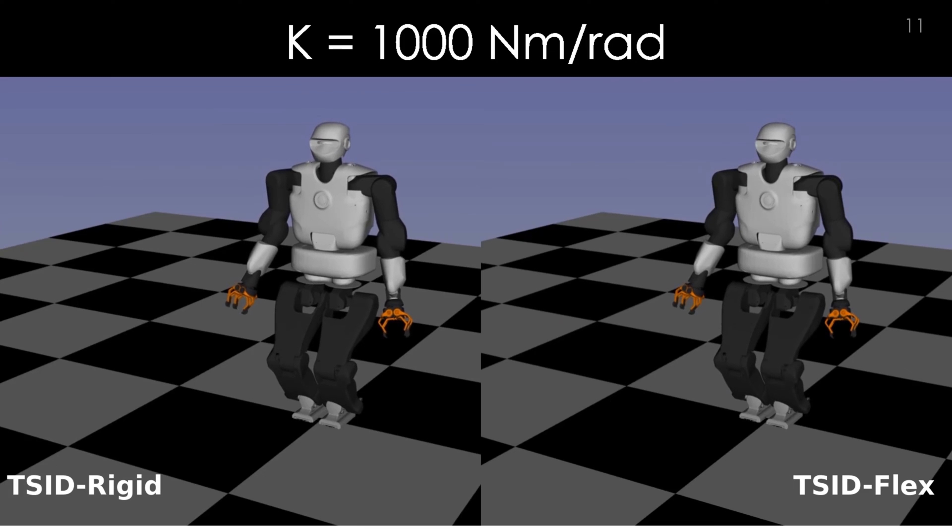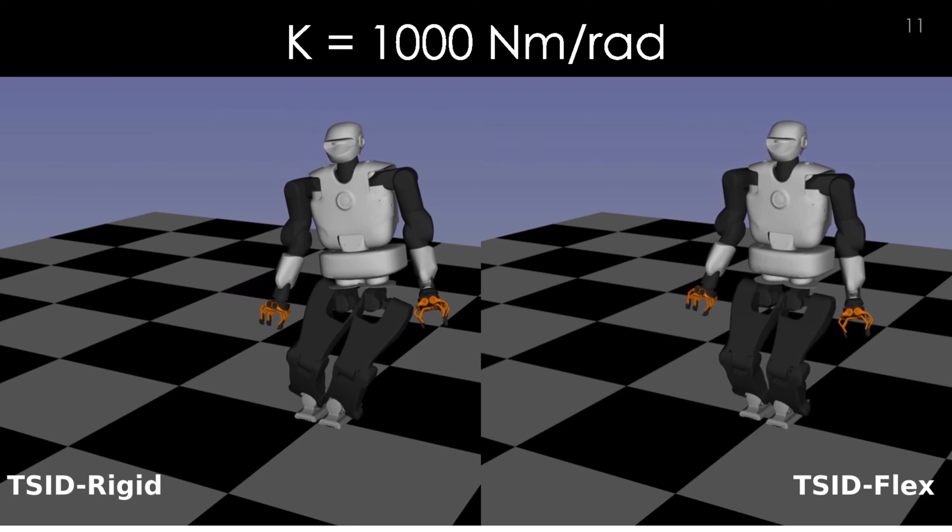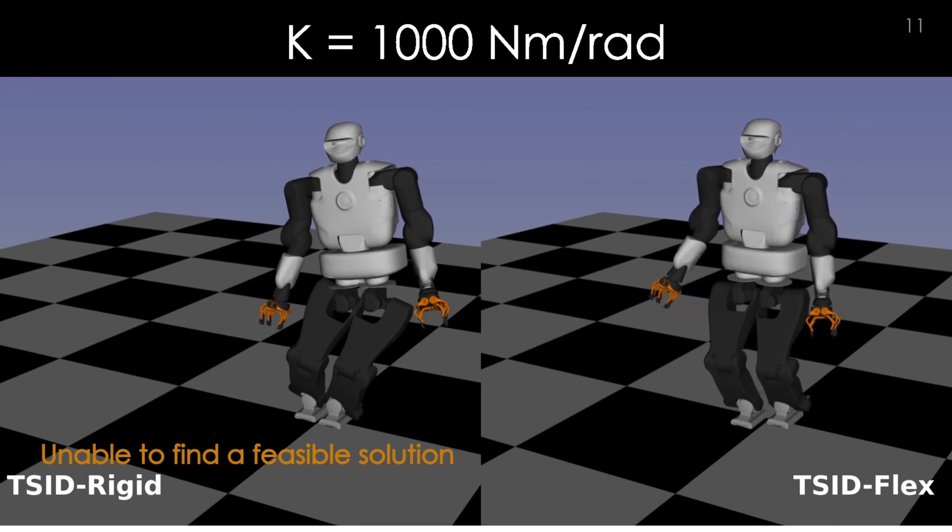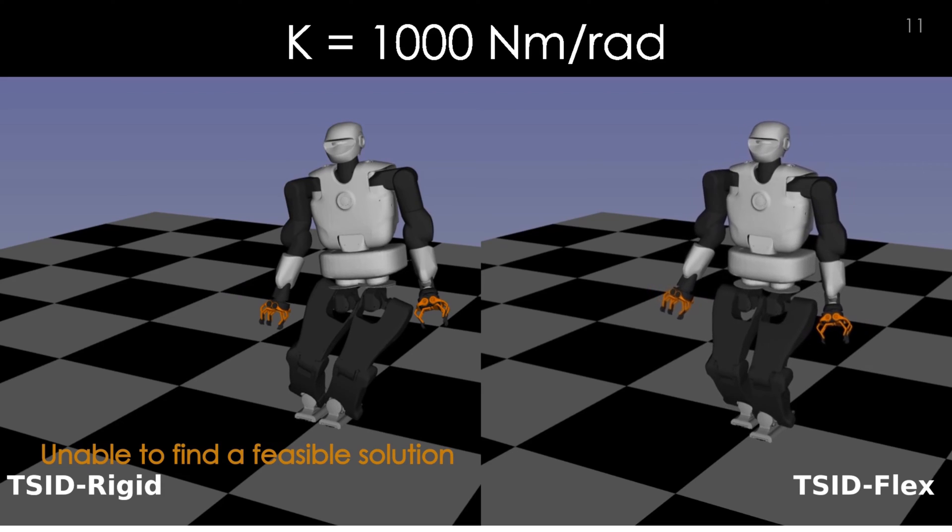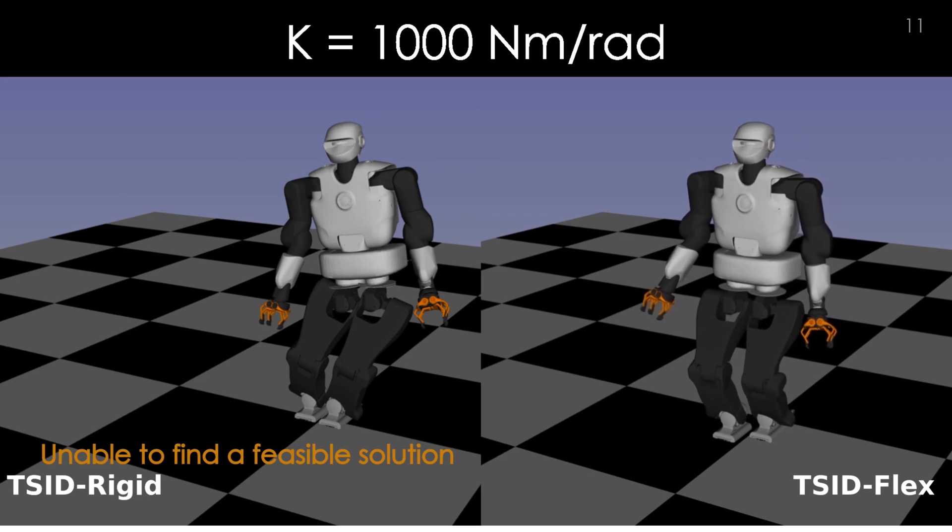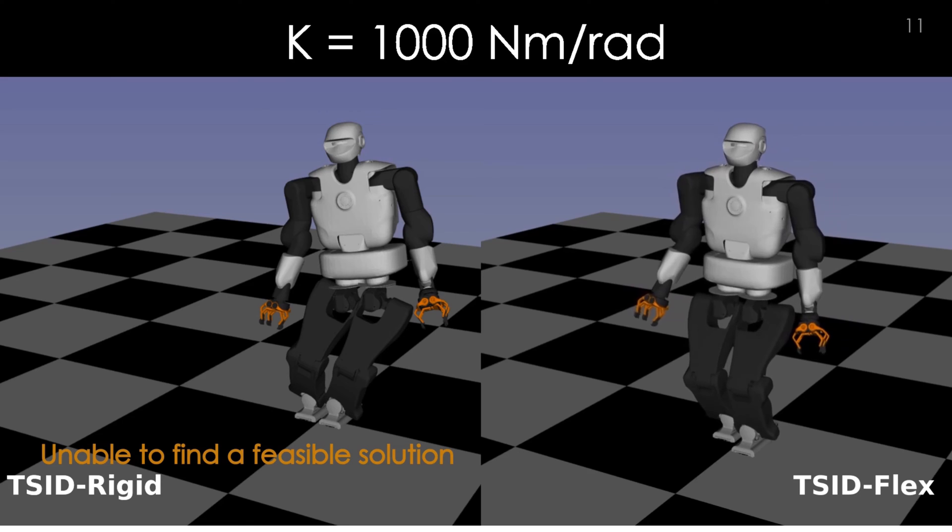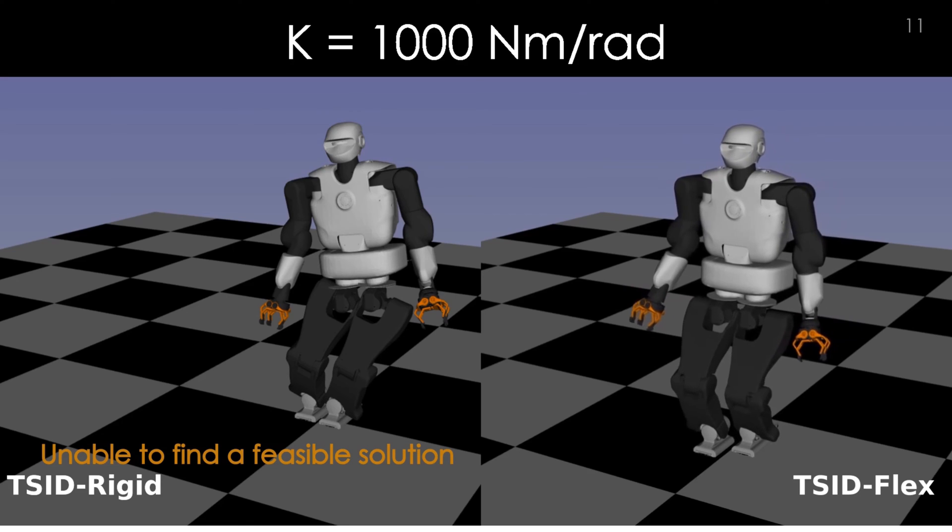On the other hand, when the link flexibility increases, TSID Rigid fails in finding a feasible solution, and the robot falls down, while the controller that we propose is still able to accomplish the locomotion task.